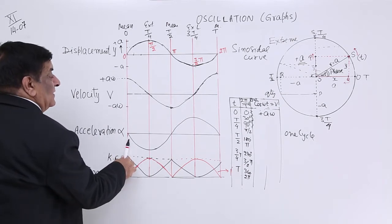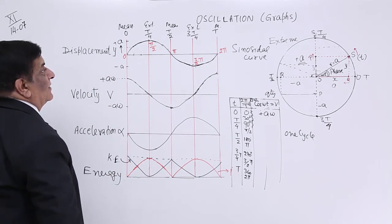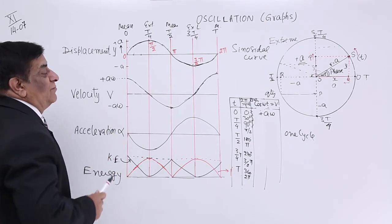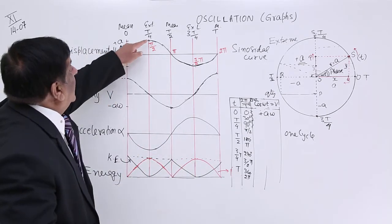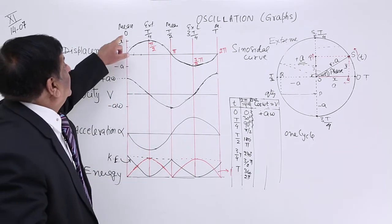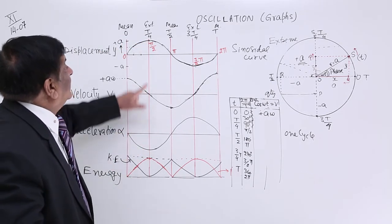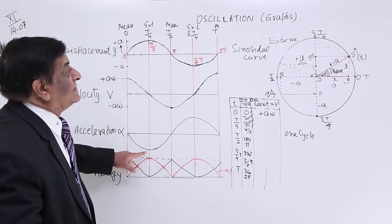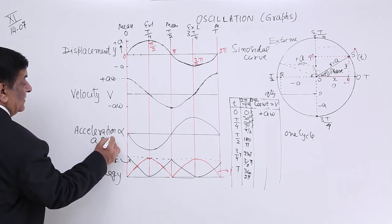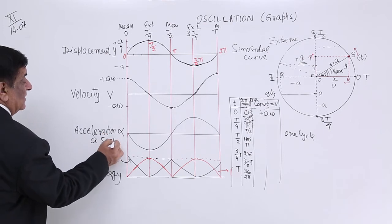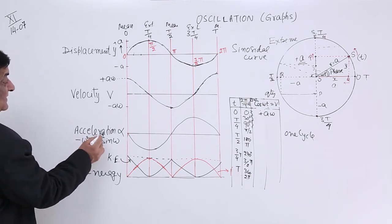For acceleration, acceleration is proportional to displacement. Both have the same equation, but acceleration is minus y omega square. So acceleration is in opposite direction. That's why when it goes up, this goes down. At 0, both are 0. At t by 4, both are maximum, but this is positive maximum and this is negative maximum.